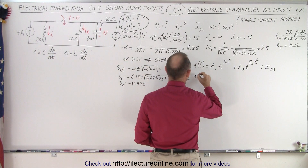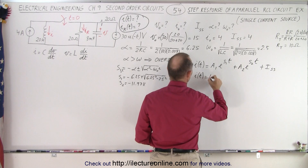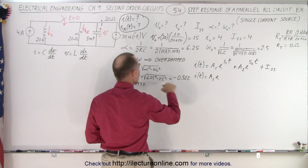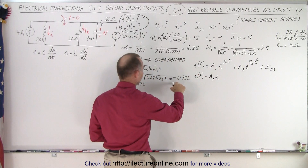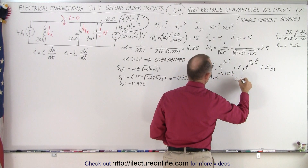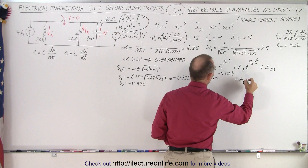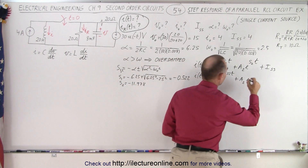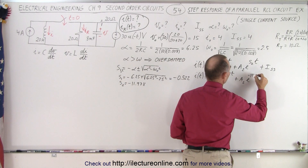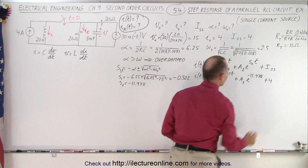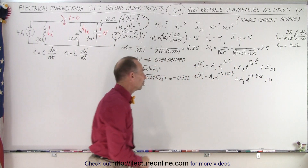Now we can plug s1 and s2 into our general equation: I of t equals a1 times e to the minus 0.522t, plus a2 times e to the minus 11.978t, plus 4 amps for the steady state current.